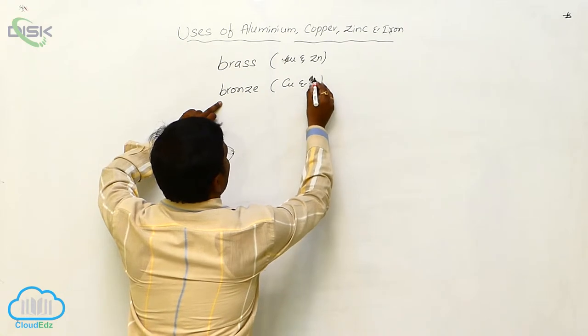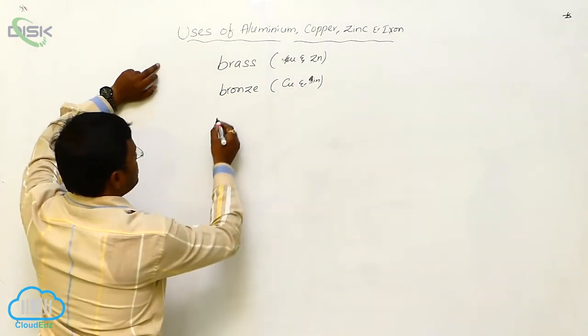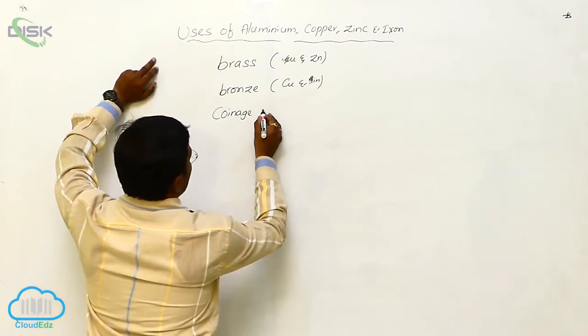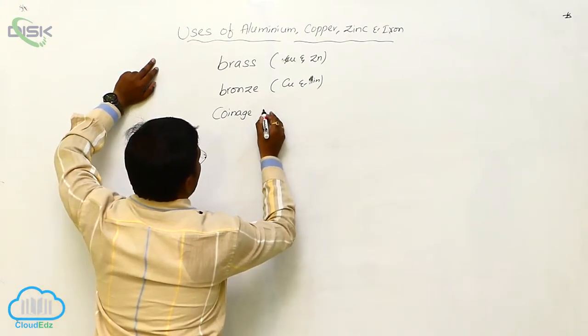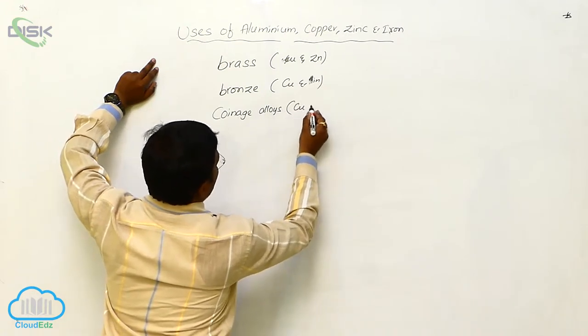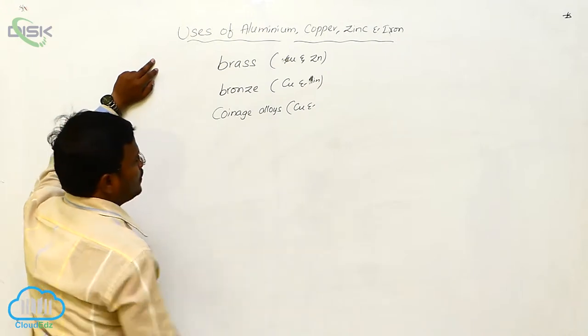Copper and Tin, whereas, Coinage Alloys. In Coinage Alloys, Copper mixed with Nickel.